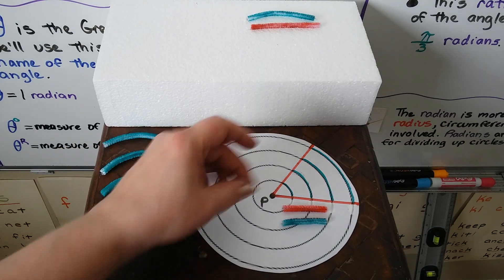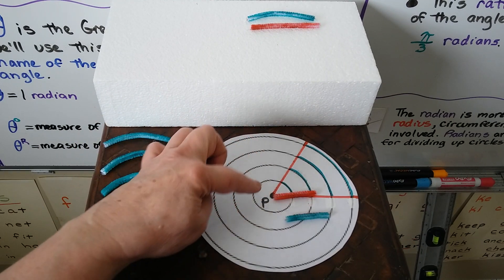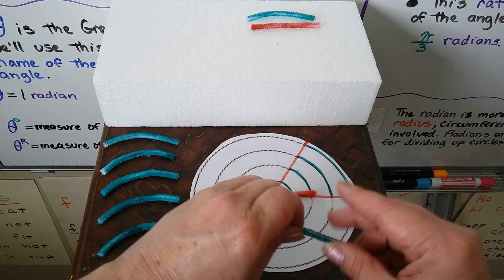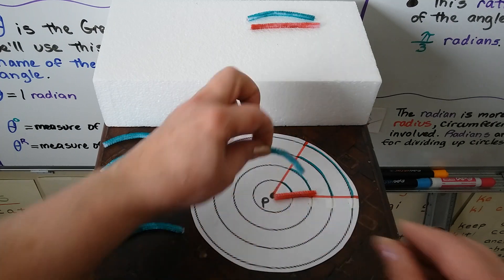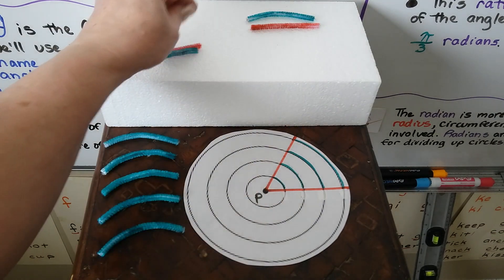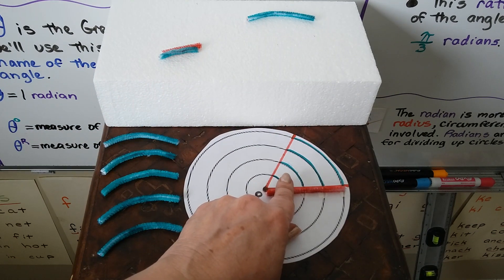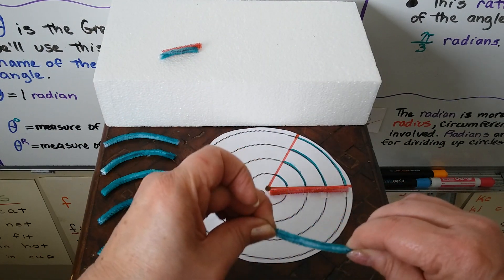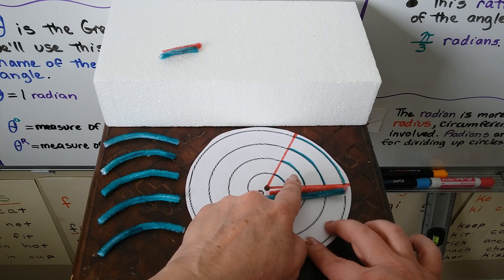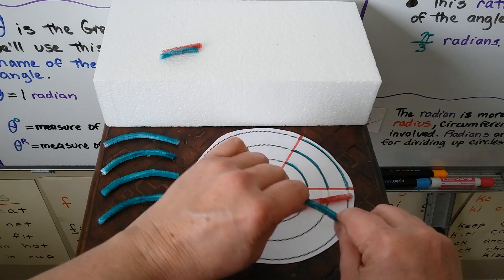I've got some pipe cleaners that I've cut, and this pipe cleaner is cut the length of this circle's radius. This pipe cleaner is exactly the same length, and if we bend this a little bit to be an arc, you can see it fits perfectly right here — it's the same length. And this one is the same length as this radius. And this green one, if it's straight, is the same length as the radius. They're the same length, and if we curve it, it's the length of the arc.